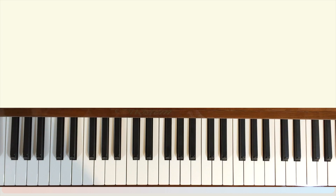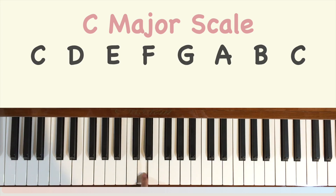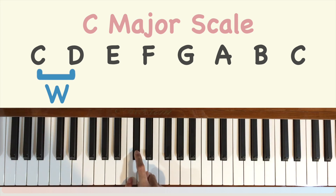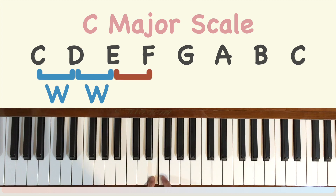Let's put the major scale formula to the test by looking at the C major scale. The C major scale consists of the notes C, D, E, F, G, A, B, C. C to D is a whole step because C sharp or Db is between them. D to E is a whole step because they skip D sharp or Eb. The distance between E and F, as mentioned earlier, is a half step.